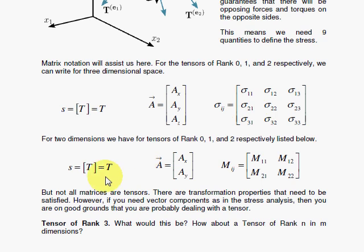And for 2 dimensions, we would have the scalar being the same. But the column vector would only have 2 components in 2 dimensions. And in 2 dimensions in a 2 by 2 form for the tensor of rank 2 would simply have 4 components there.